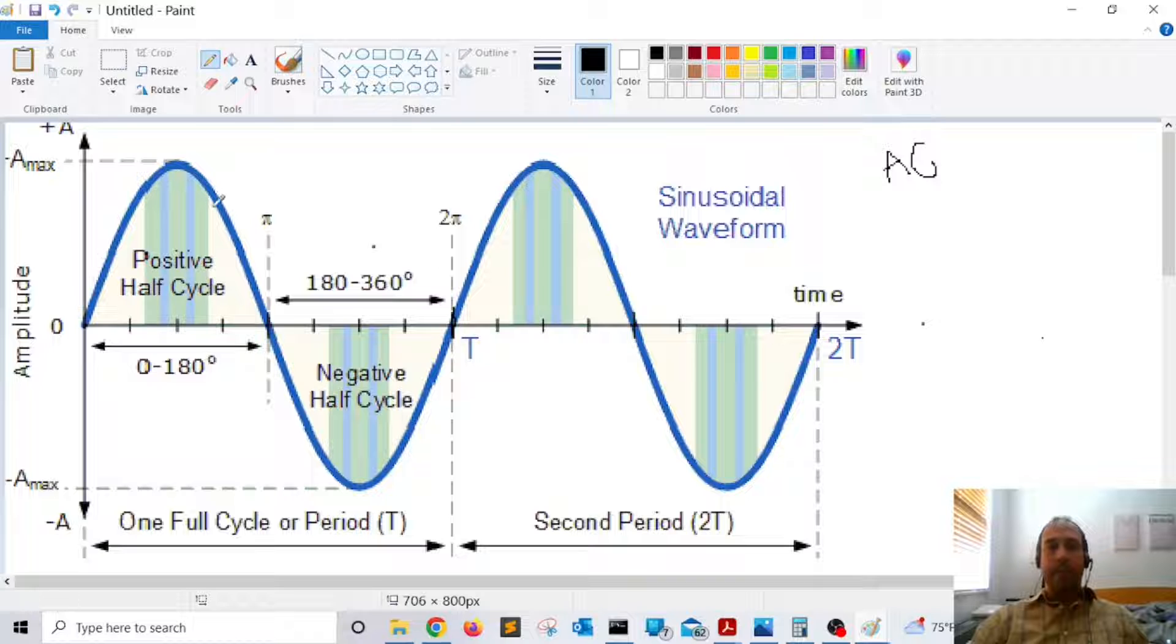Once it completes one cycle, that's what you call the period of the wave, which is denoted by the letter T. That's one cycle and that is what we are going to use in order to calculate the frequency of a signal.